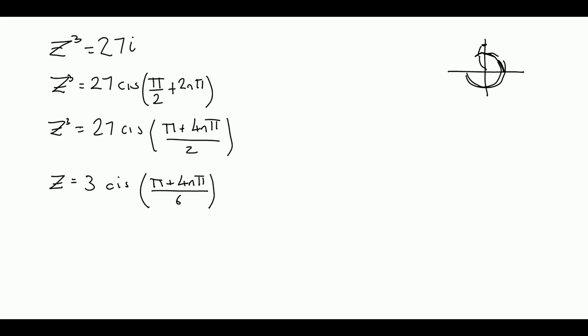So that's actually our general formula, but let's go for z₀ to get one of our roots. That's going to give me 3 cis(π/6), because obviously 4 times 0 is 0.